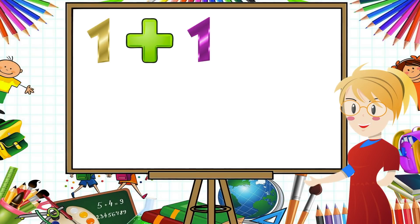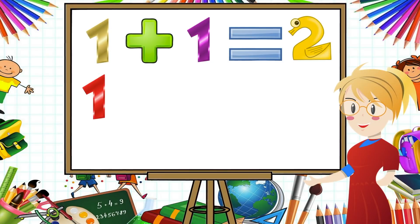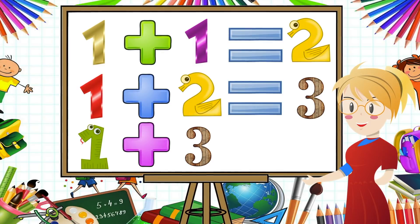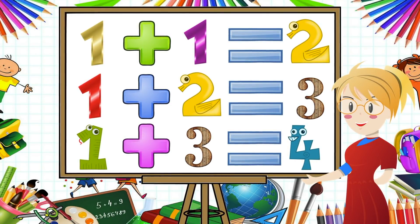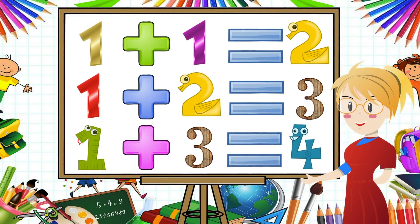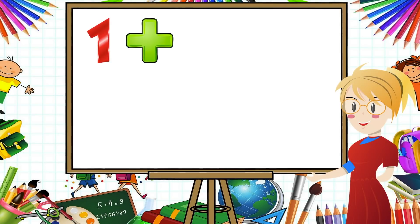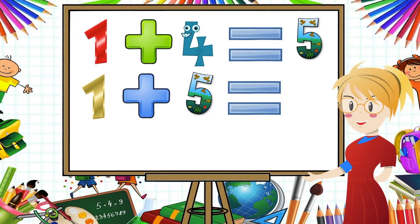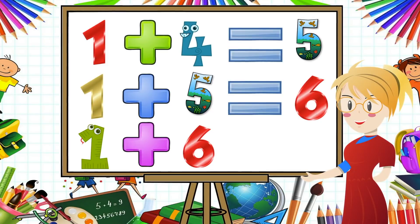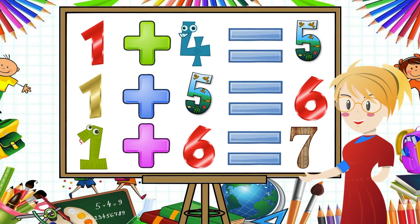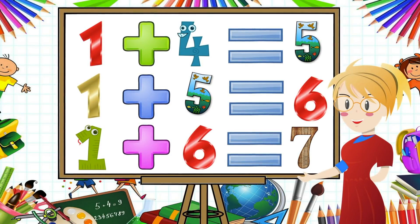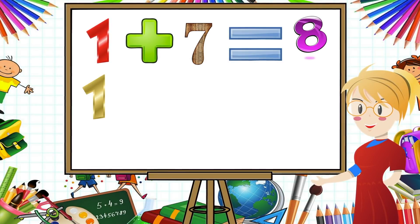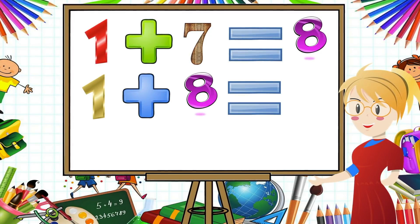One plus one equals two. One plus two equals three. One plus three equals four. One plus four equals five. One plus five equals six. One plus six equals seven. One plus seven equals eight. One plus eight equals nine.